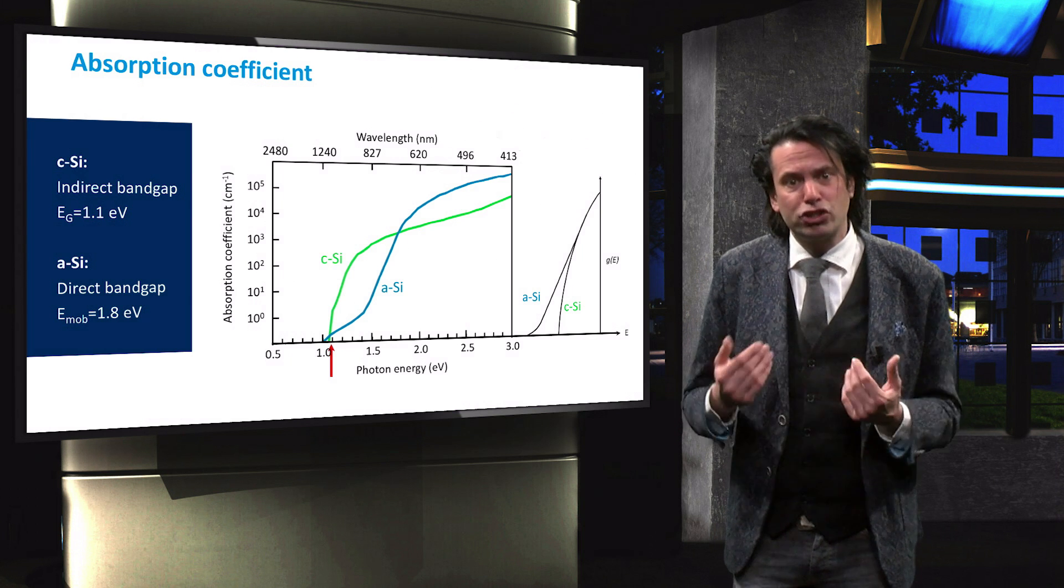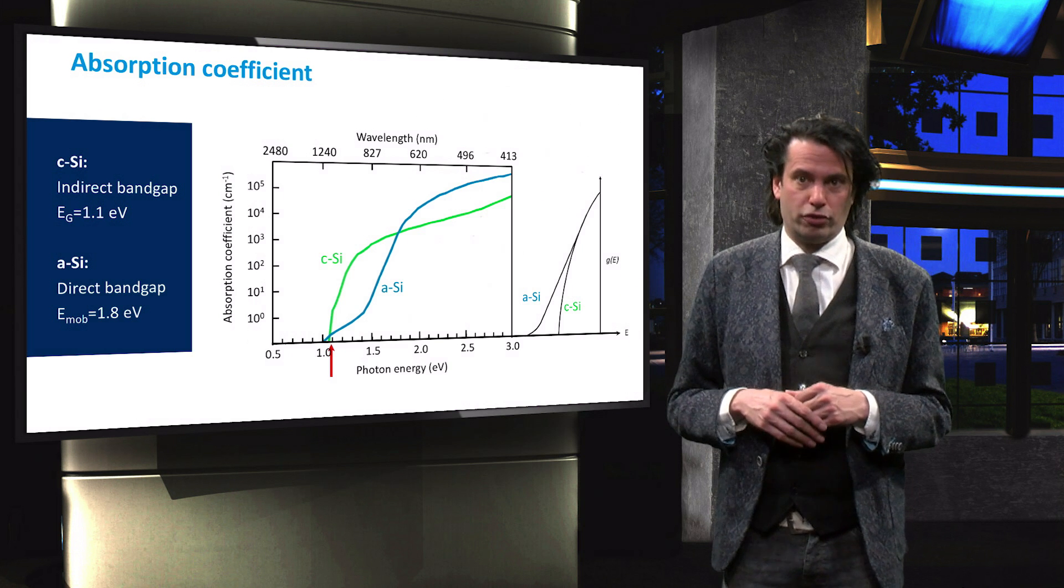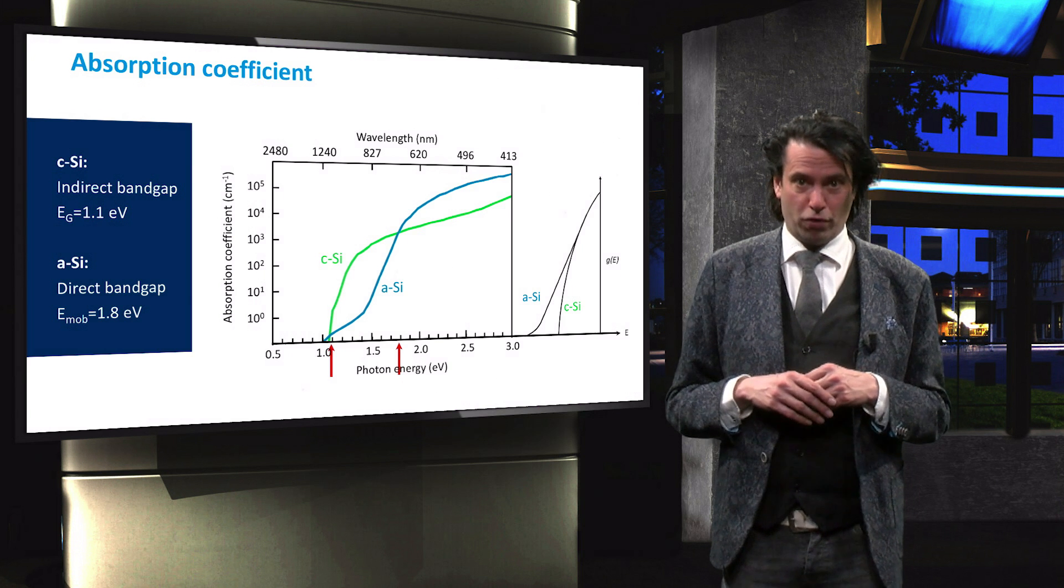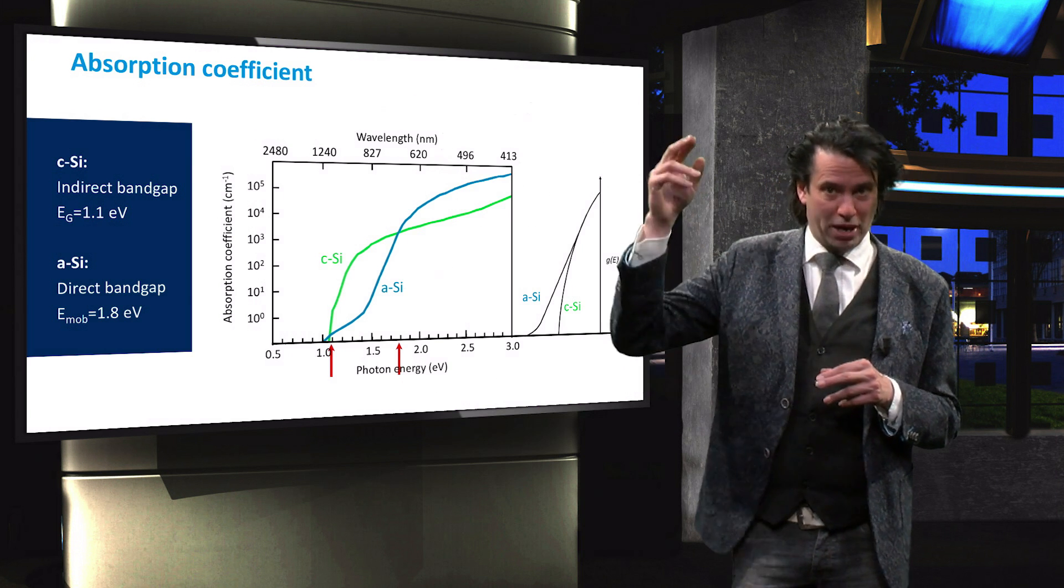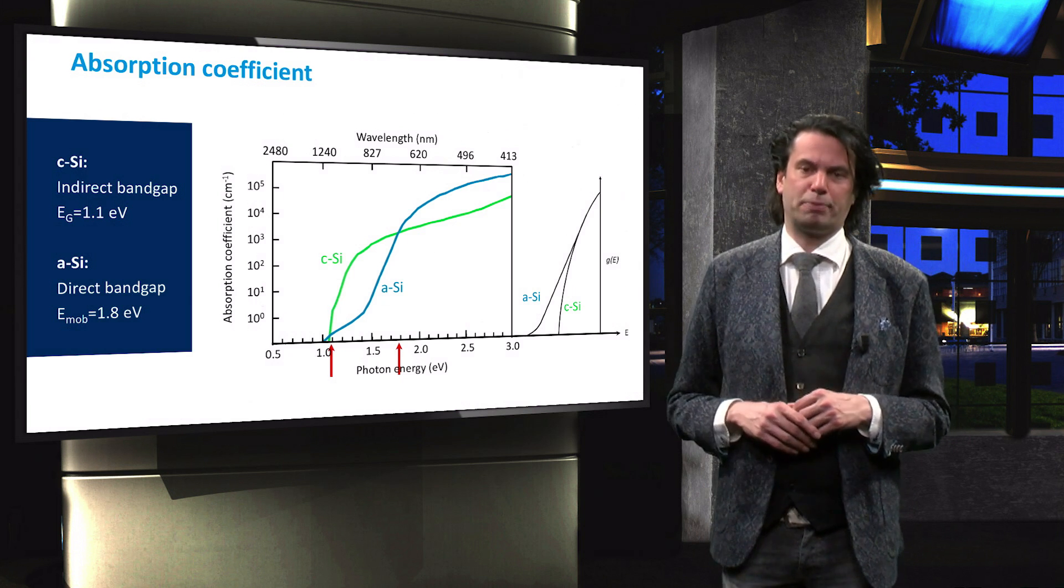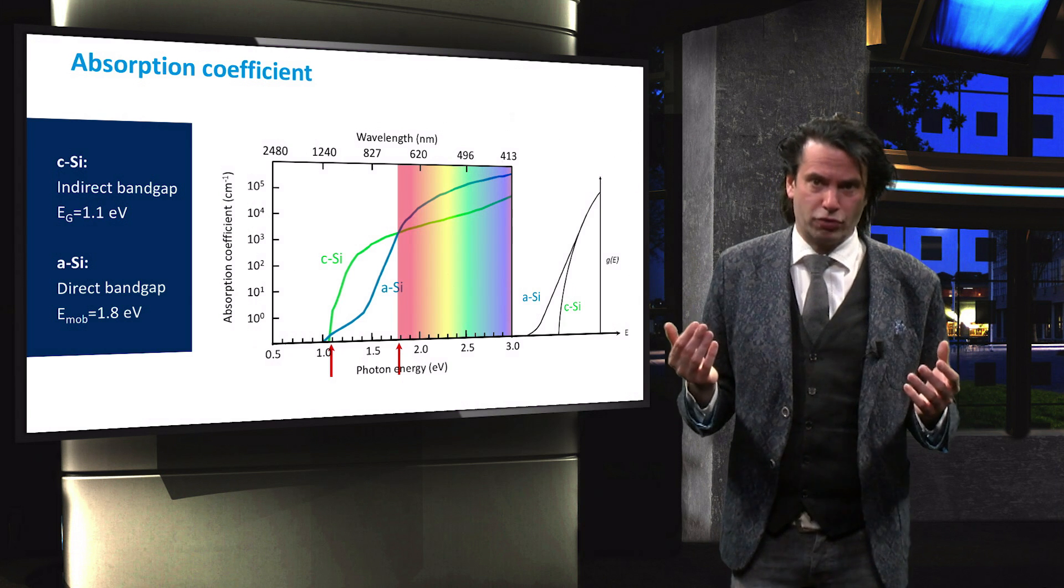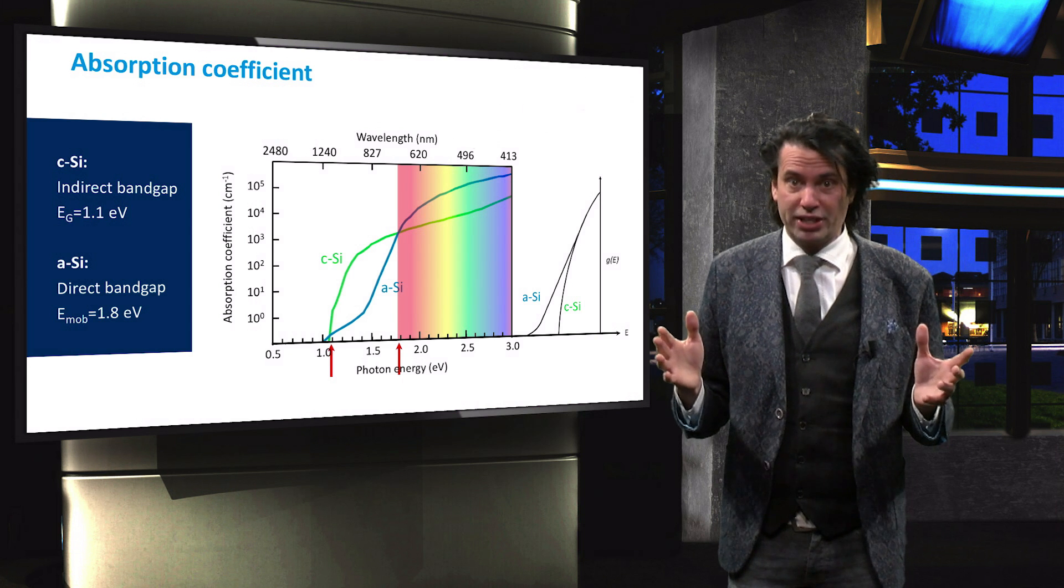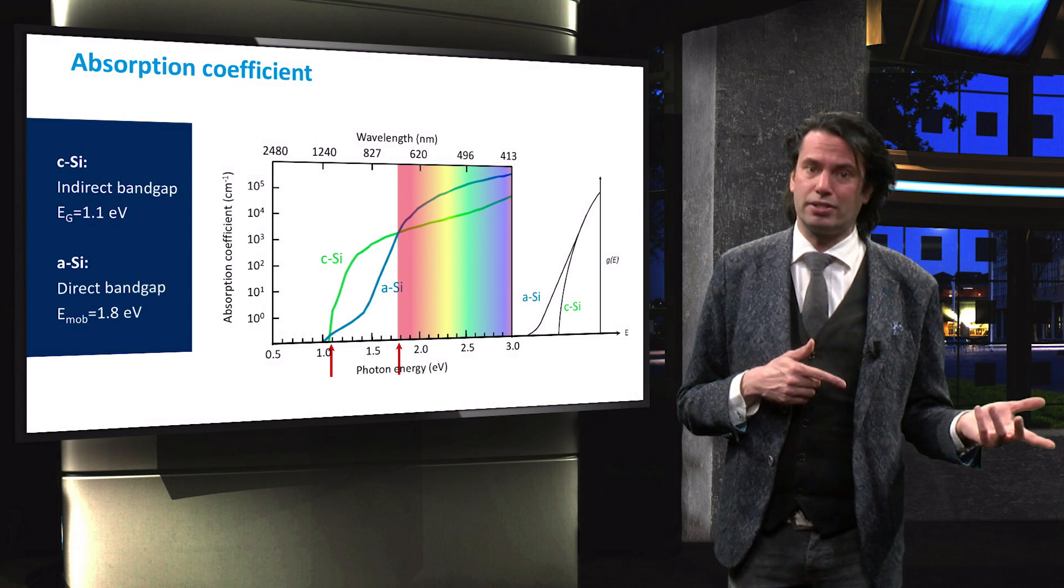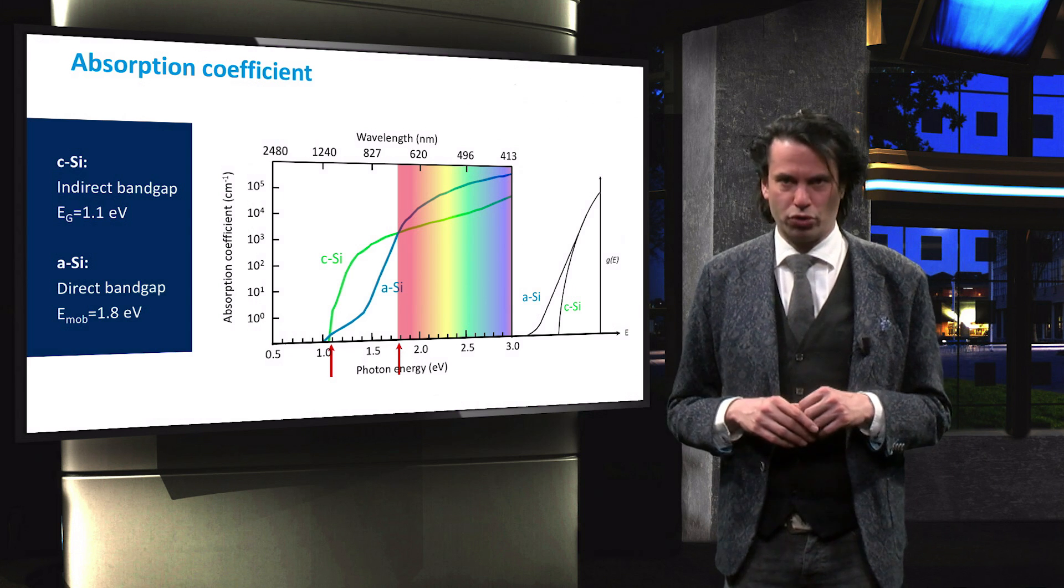Again, the initial shape of the absorption coefficient curve corresponds with the density of state curves. Starting from 1.8 eV, the absorption coefficient of amorphous silicon becomes at least an order of magnitude larger than of crystalline silicon due to the direct band gap. This means that in the visible and ultraviolet parts of the spectrum, which are the parts with the highest photon energy, amorphous silicon is much more absorbing than crystalline silicon. This makes it such an interesting material for thin-film solar cells.